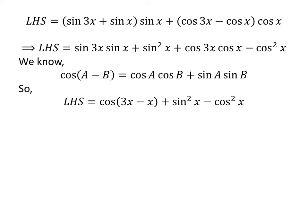As you can see, the left hand side expression — sine of 3 times x times sine of x plus cosine of 3 times x times cosine of x — is in the form of the above identity. So, application of the above identity gives us the left hand side equal to cosine of 3 times x minus x plus square of sine of x minus square of cosine of x.